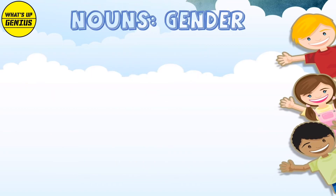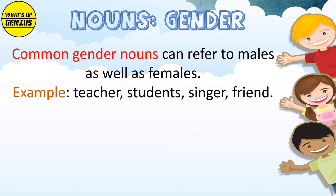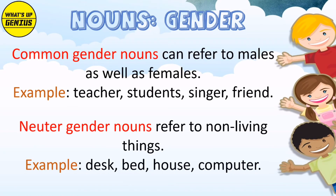Common Gender Nouns can refer to a male as well as female. Example: Teacher, Student, Singer, Friend. Neutral Gender Nouns refer to non-living things. Example: Desk, Bed, House, Computer.